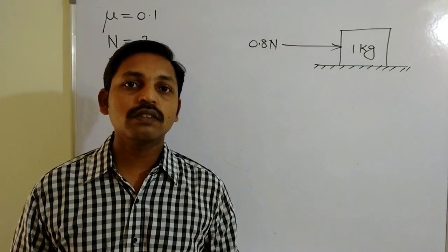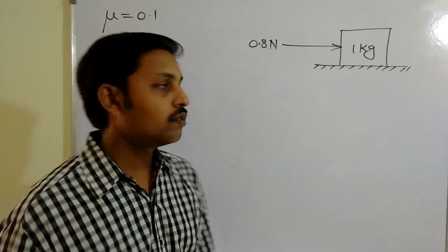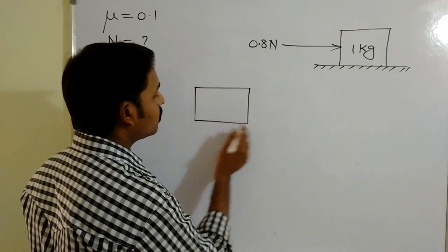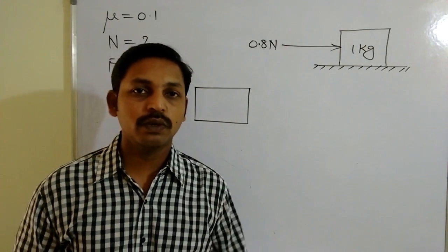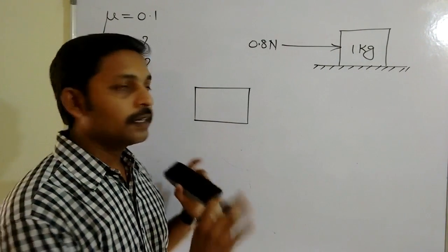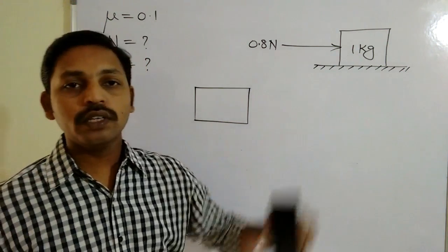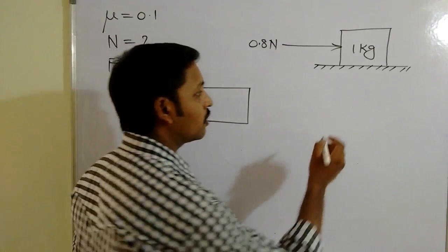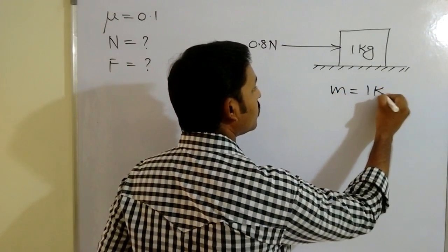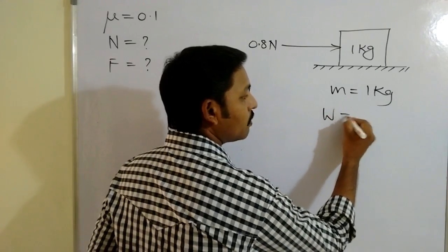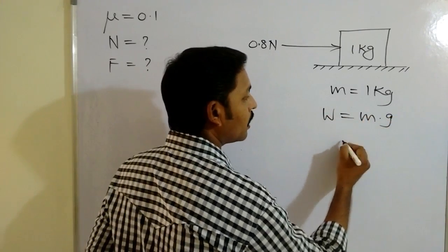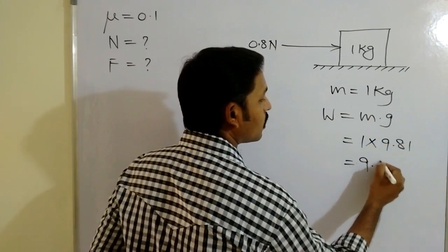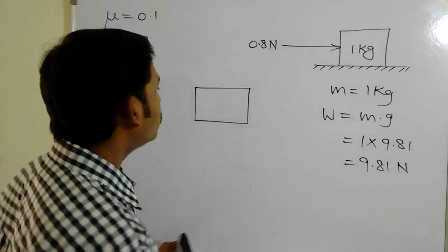To solve this, first consider the free body diagram. Remove all the surface contacts and represent them separately. The weight of the block is given in terms of mass, so you need to convert it into newtons. Mass is given as 1 kg, and weight equals mass into acceleration due to gravity, so weight is 1 × 9.81 = 9.81 newtons.